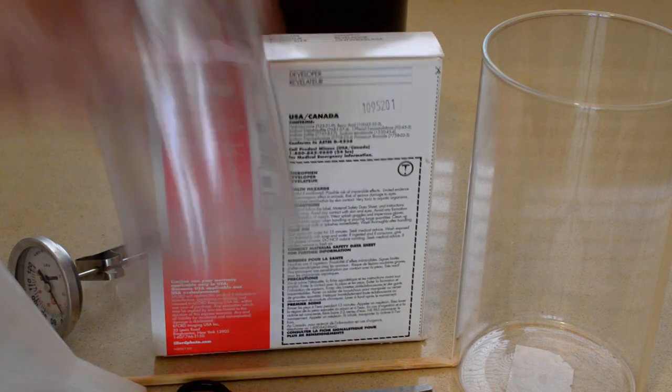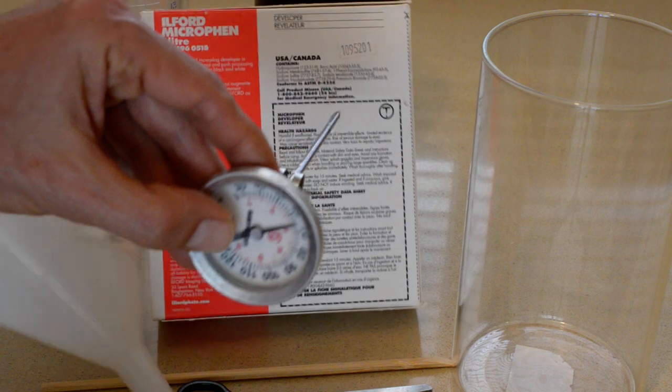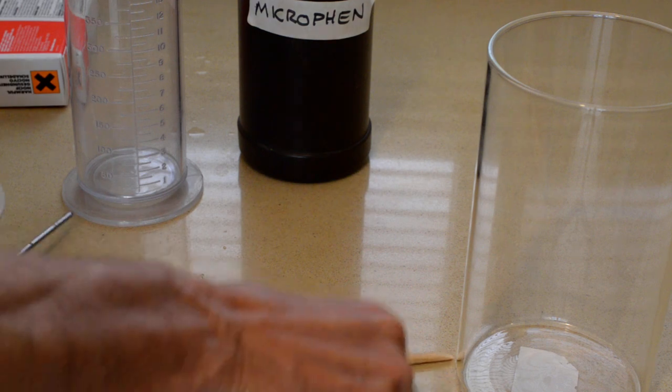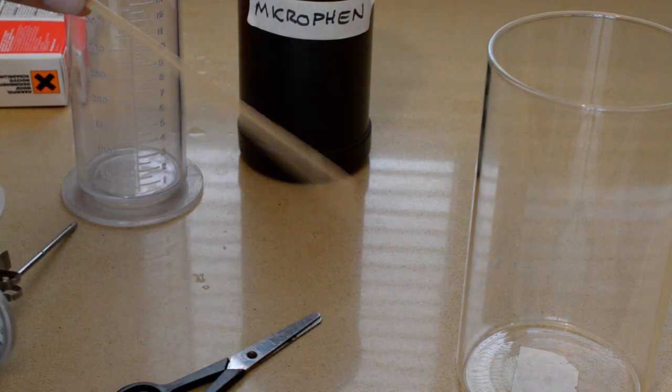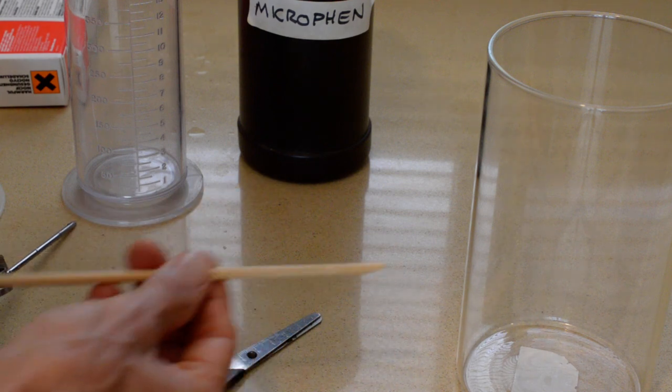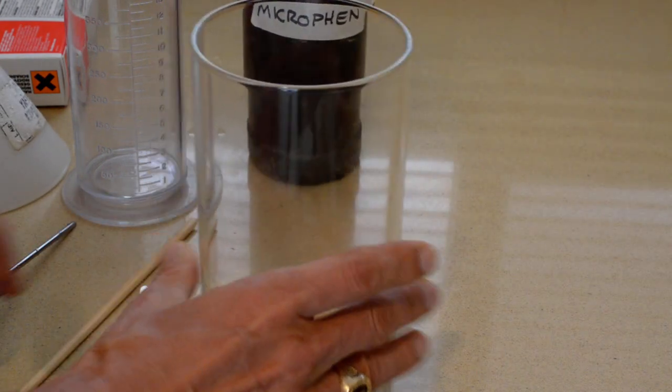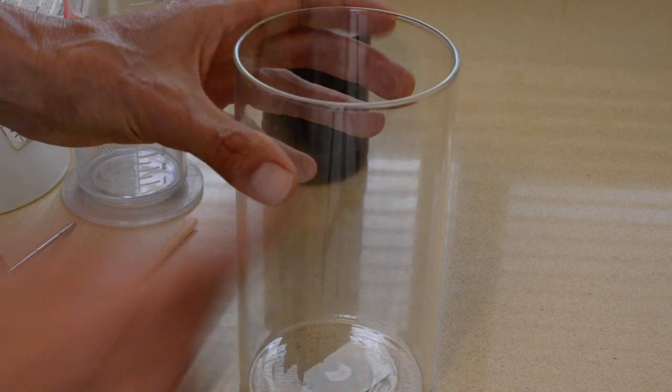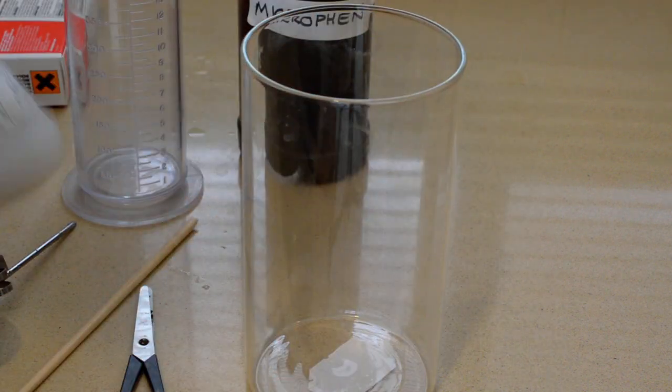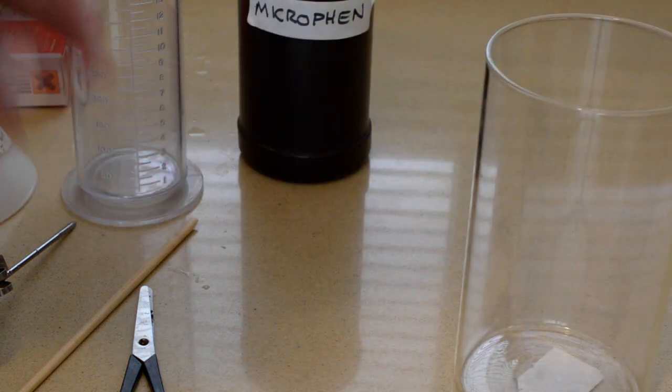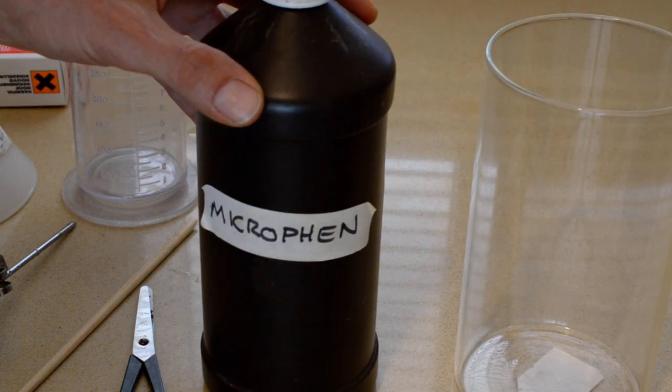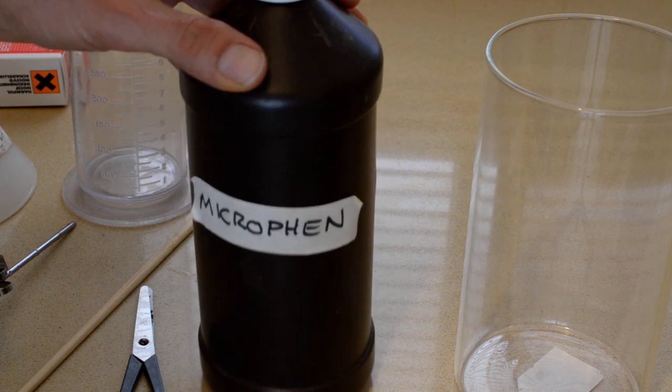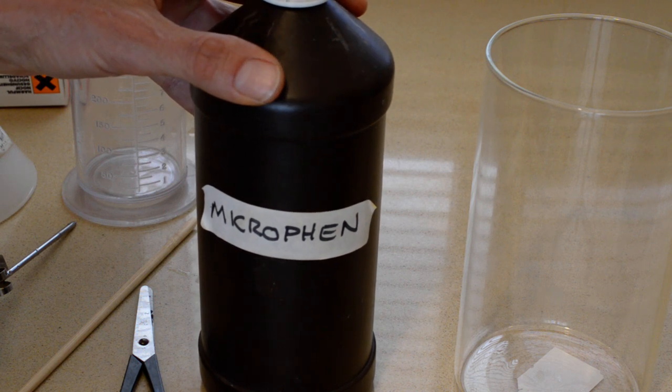Here's the stuff you're going to need. First of all, obviously you need a box of powdered developer. In this case, we're using Ilford Microfin. You will need a graduated cylinder, a thermometer, a funnel, a pair of scissors, something to stir the chemicals with. This is just half of a chopstick, and a beaker. This beaker is a flower vase that I found on sale the other day. It doesn't have one of those lips to pour off the liquid, but that's why we got the funnel.